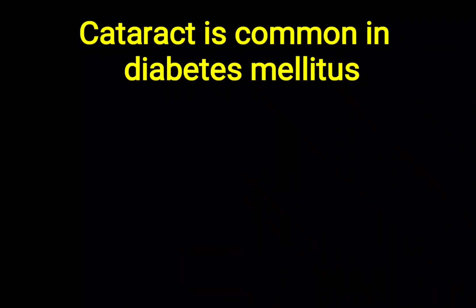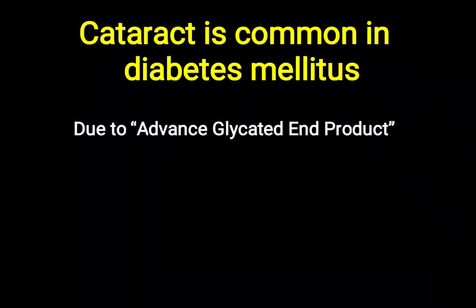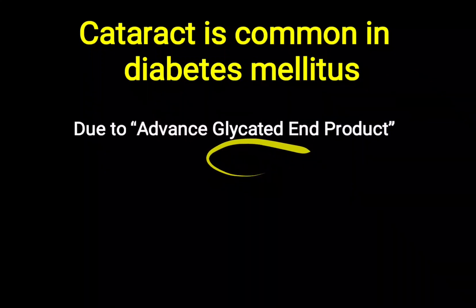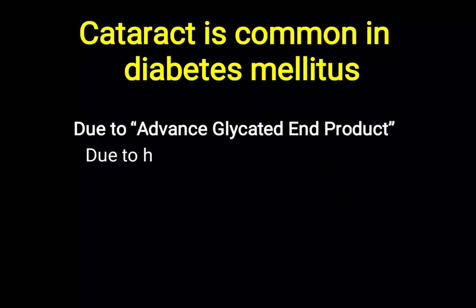In diabetes mellitus, whether insulin dependent or insulin independent, there is an increased level of glucose. This glucose attaches over protein molecules. This attachment is mostly enzymatic, meaning an enzyme is needed, but sometimes due to high glucose levels, glucose can directly attach over the protein. That is called non-enzymatic glycation, and it leads to advanced glycated end product (AGE) formation, which causes various conditions.